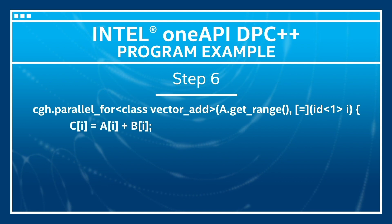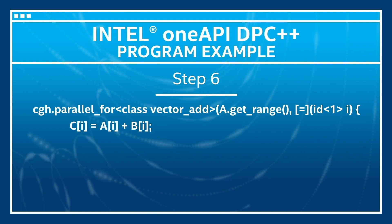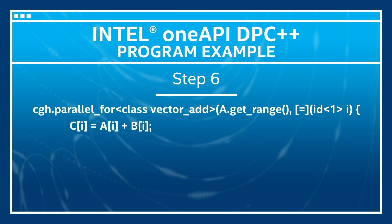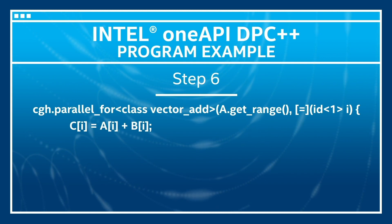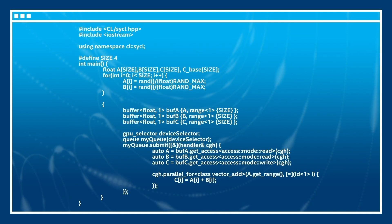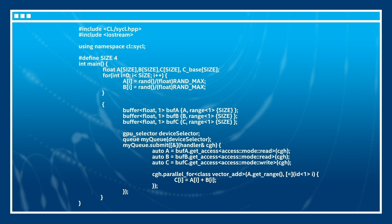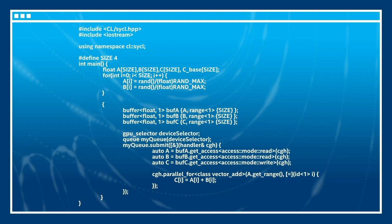The code written in parallel_for will be accelerated by the accelerator — which is a GPU in this example — and the rest is executed on the host. The results are copied to vector C at the destruction of buff C when the scope ends and the data is copied from the device back to the host. Everything is written inside a single complete C++ program needed to execute the addition of two vectors on a GPU, unlike OpenCL.